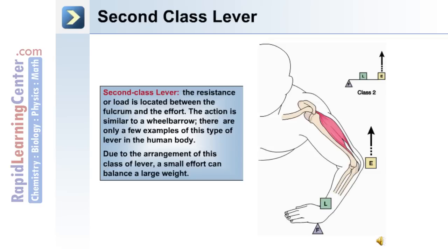A second-class lever. In a second-class lever, the resistance or load is located between the fulcrum and the effort. The action is similar to a wheelbarrow. There are only a few examples of this type of lever in the human body. Due to the arrangement of this class of lever, a small effort can balance a large weight.